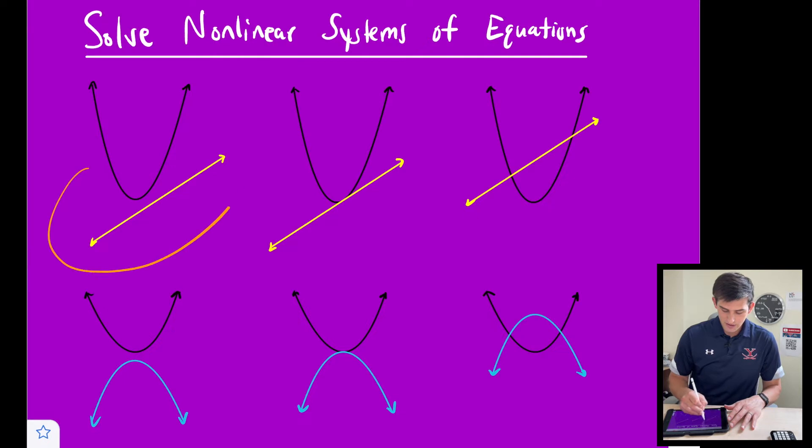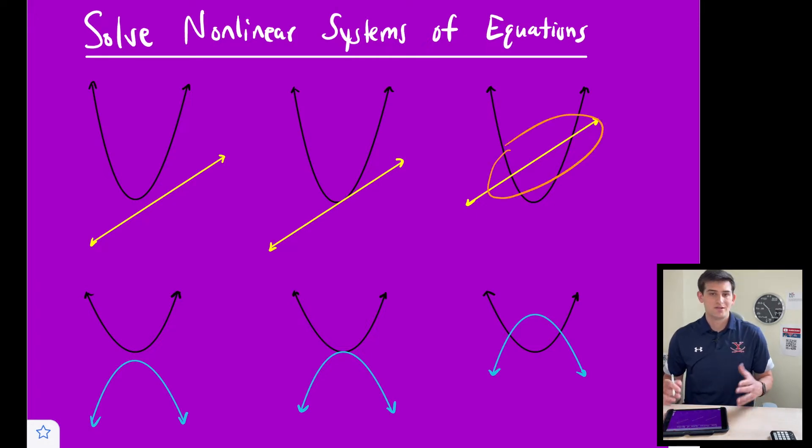then we could have three different types of solutions. Notice we have no intersection here, so that would be no solution. We have one intersection right there, so one solution, or we have two intersections, so two solutions.